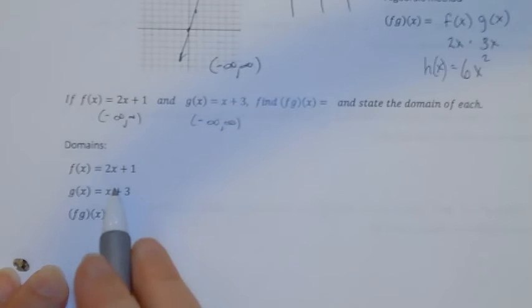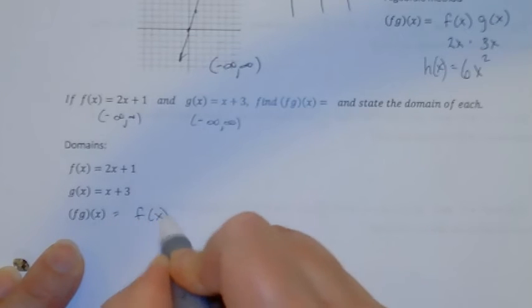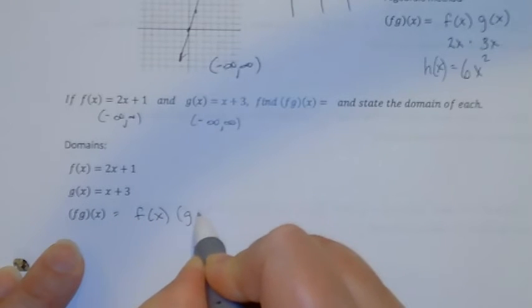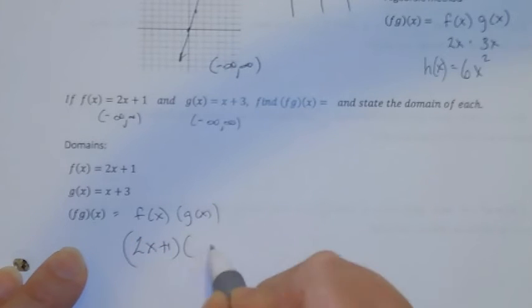So now let's see if we can find the multiplication of those. So fg of x means f of x times g of x. f of x is 2x plus 1. I'm going to multiply that times g of x, which is x plus 3.